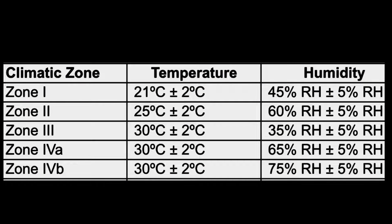Now we will see the temperature and humidity conditions for each zone. For Zone 1, temperature is 21°C and humidity is 45%. For Zone 2, temperature is 25°C and humidity is 60%. For Zone 3, temperature is 30°C and humidity is very low at 35%.